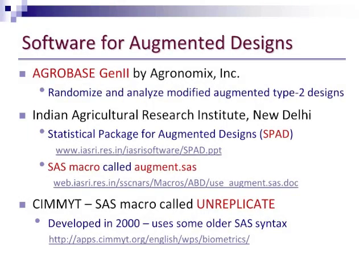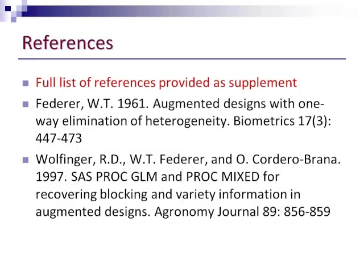I searched around for software available for analyzing augmented designs. Agribase has a nice feature for looking at the MAD type 2 designs, and that's what the Barley Program here is using. There were some softwares available from the Indian Agricultural Research Institute; they also had published some SAS macros. CIMIT had a SAS macro available online, but I couldn't get it to work — some of the SAS syntax was outdated.